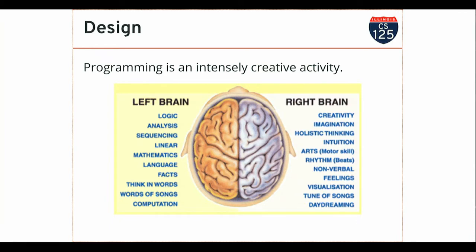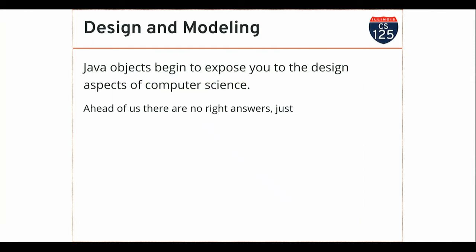There are some constraints here. Your classes have to actually carry around enough information about the data you're working with to be useful, but there's also a lot of choices that you make along the way. So objects start to expose us to these design aspects — there's no single right answer, but it gives you a chance to use very complementary human capabilities. It's not just logic; we also want you to be creative, imagine how your things are going to be used, and think about how the whole program works together.